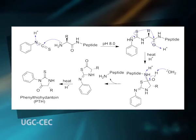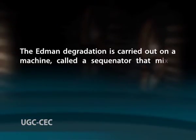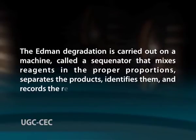Here you can see an overview of the peptide sequencing. The use of sequential reactions carried out under first basic and then acidic conditions provides control over the entire process. Each reaction with the amino terminal amino acid can go essentially to completion without affecting any of the other peptide bonds in the peptide. After removal and identification of the amino terminal residue, the new amino terminal residue so exposed can be labeled, removed, and identified through the same series of reactions. This procedure is repeated until the entire sequence is determined. The Edman degradation is carried out on a machine called a sequenator that mixes reagents in the proper proportions, separates the products, identifies them, and records the results.